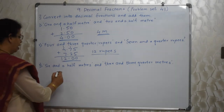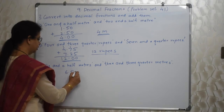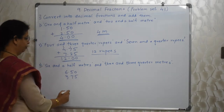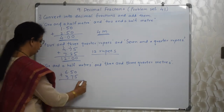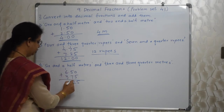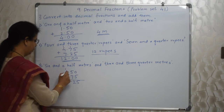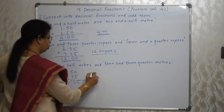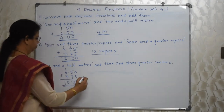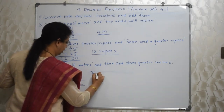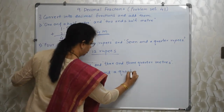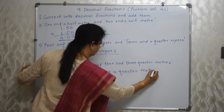Aage baarte hai. 6 and a half meters — 6 and a half meters. And 3 and 3 quarters — 3 and 3 quarters is 0.75. And karte hai. 0 plus 5, 5. 5 plus 7, 12. So 1 carry. Decimal ke niche parabar decimal. 1 plus 6, 7. 7 plus 3, 10. So it is 10 and a quarter meters. Lithi hai idar — 10 and a quarter meters is the answer.